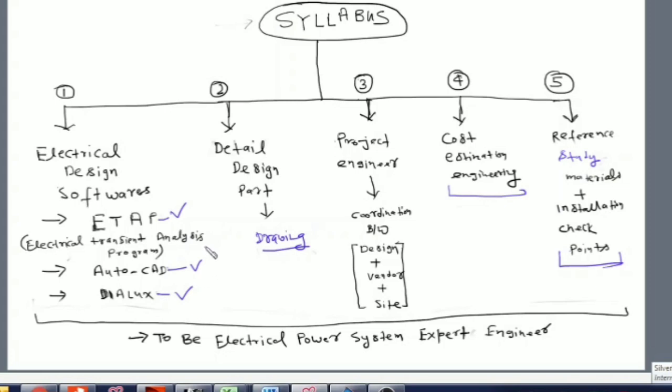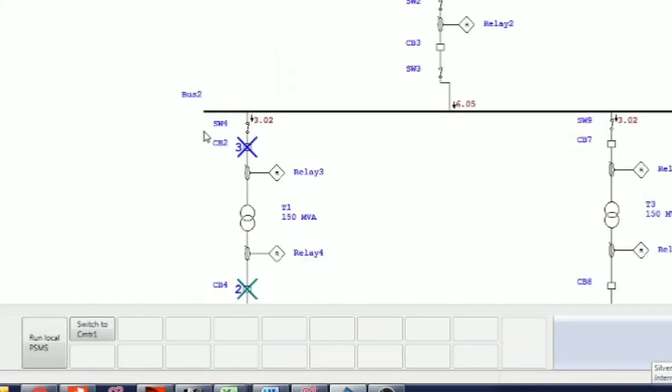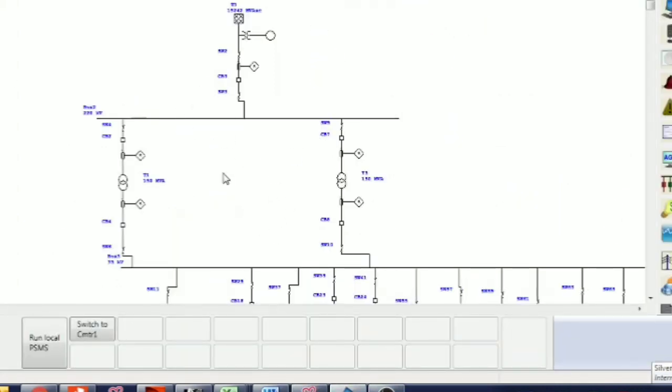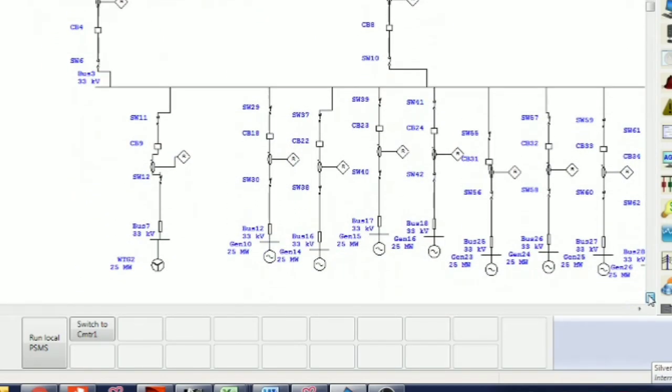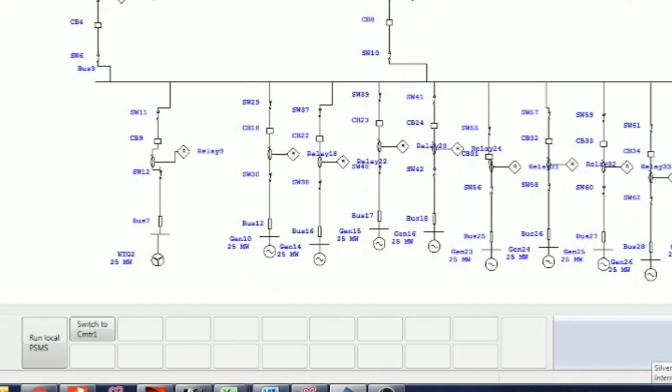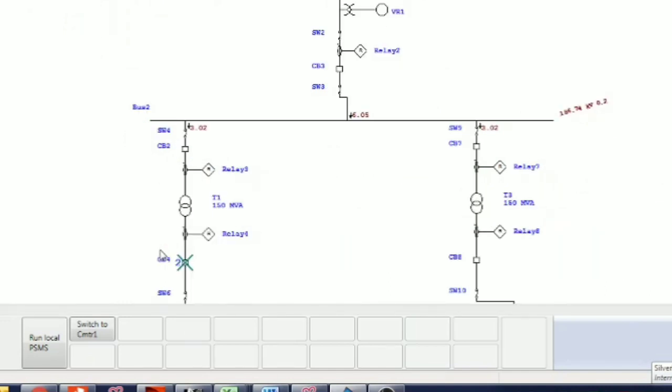We have this 220 by 33 kilovolt substation single line diagram. When we insert any fault here, you can see the amount of fault current, circuit breaker tripping sequence, and relay coordination.